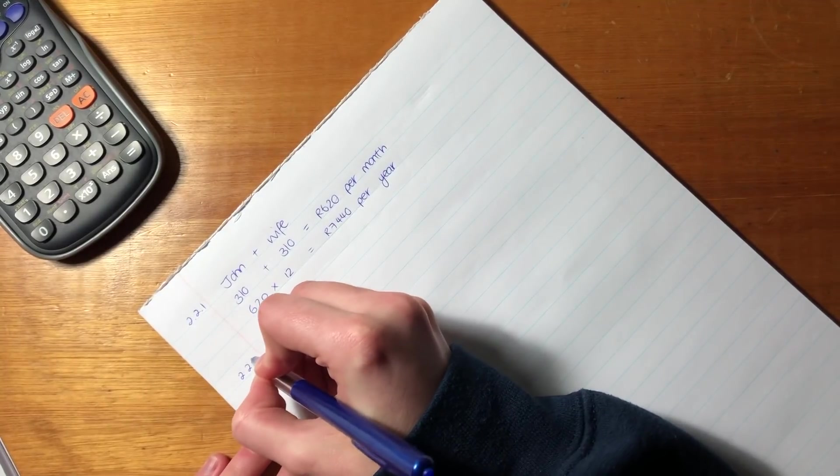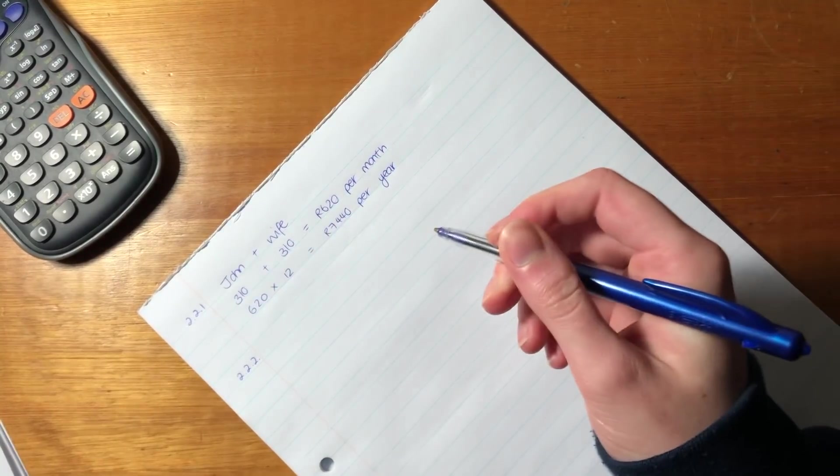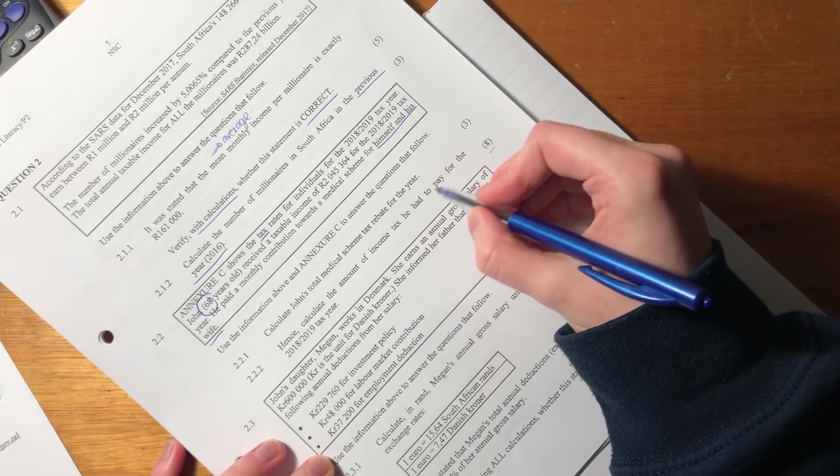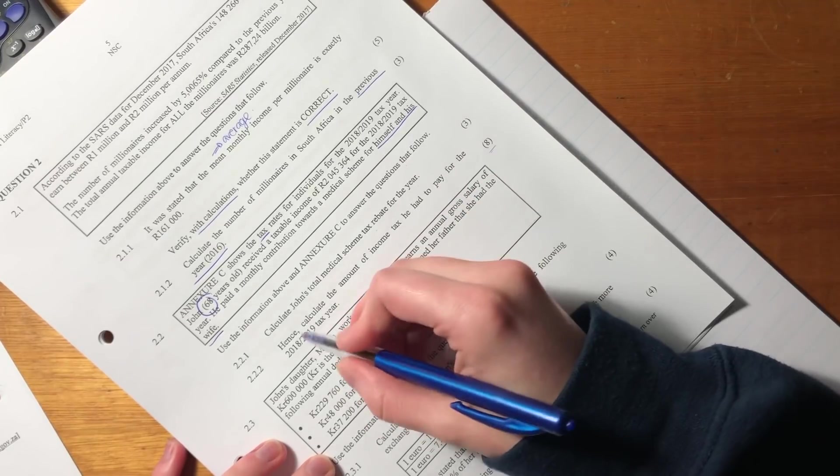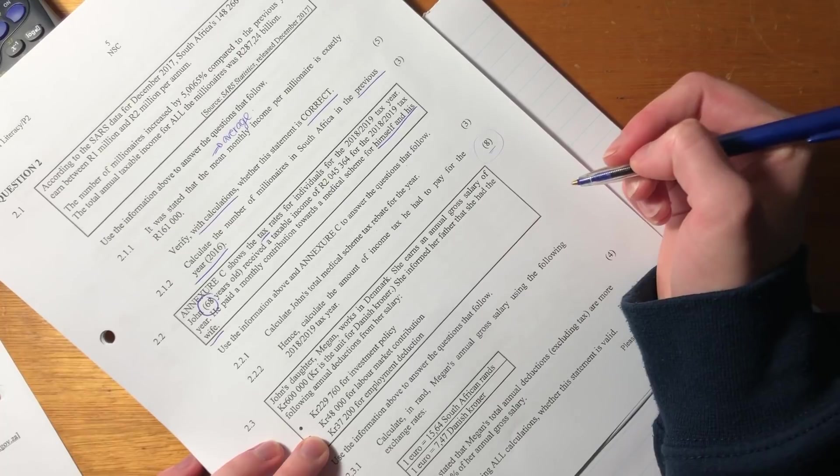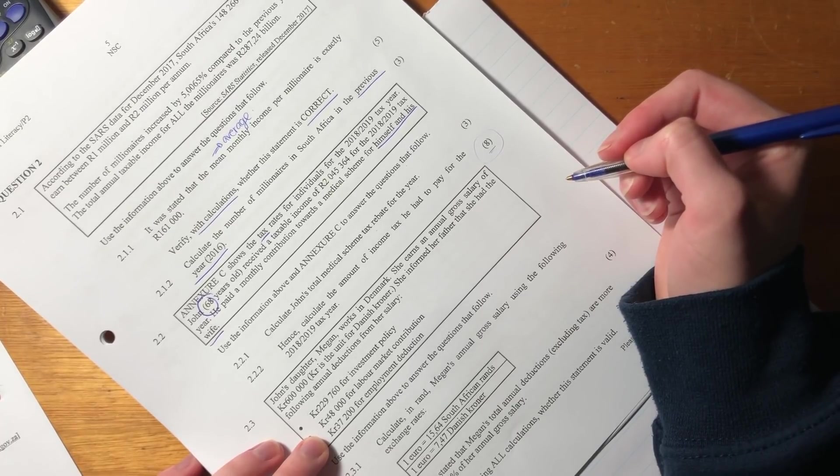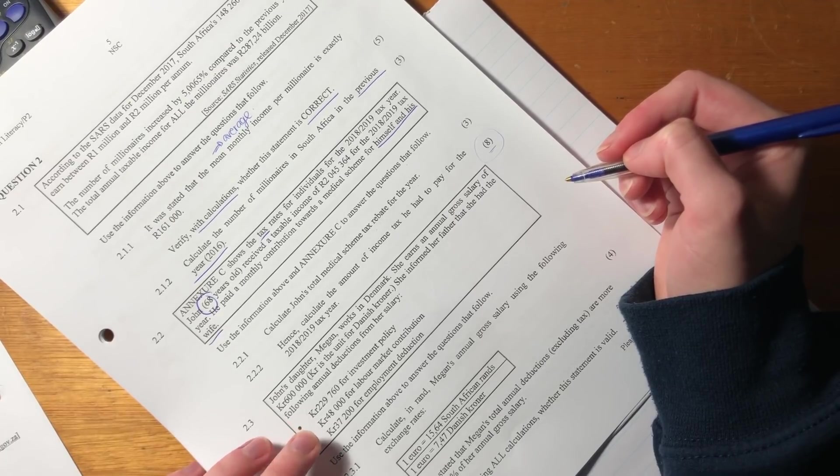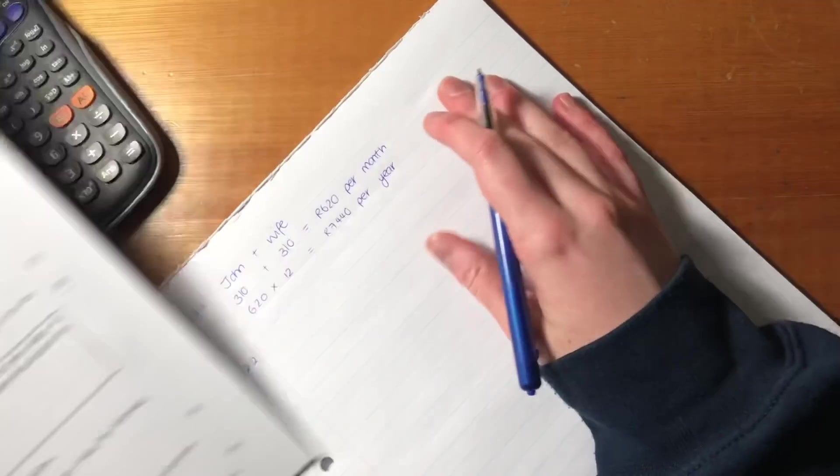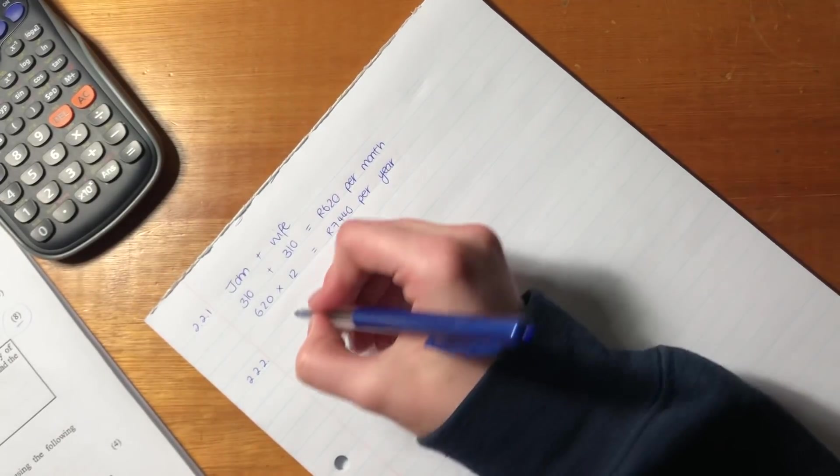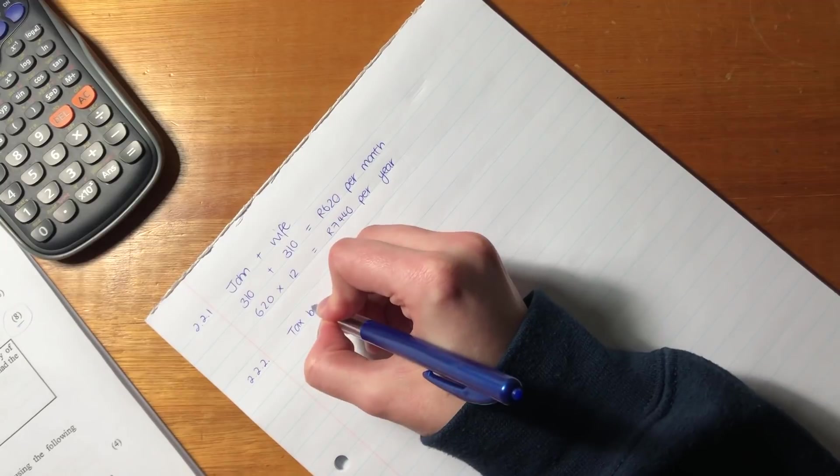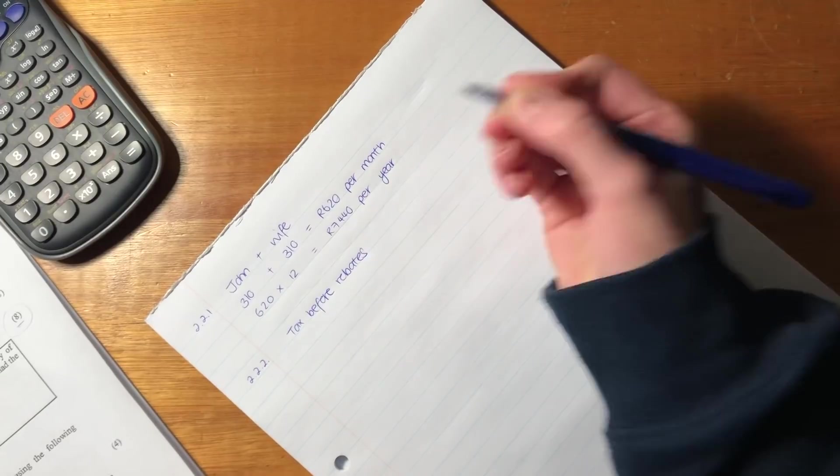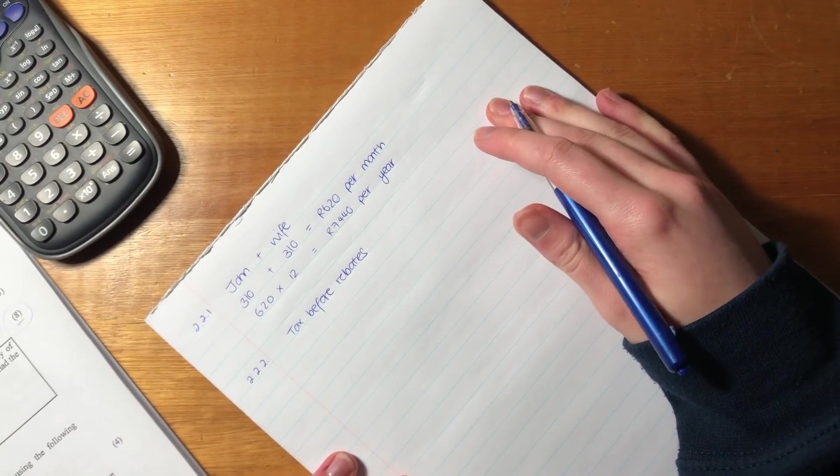Okay. So let's now move on to the next question. Okay. So it says, hence, calculate the amount of income tax he had to pay for this tax year. Now, this is a big question, guys. It's eight marks. And often these are the sort of questions that we like, okay, I'm going to leave this till the end of the paper because it's too tricky to do, but it's not. There's an easy way of approaching it. Basically the way I always do it is I calculate the tax before rebates, and then I account for the rebates and then we get the amount that he has to pay in tax.